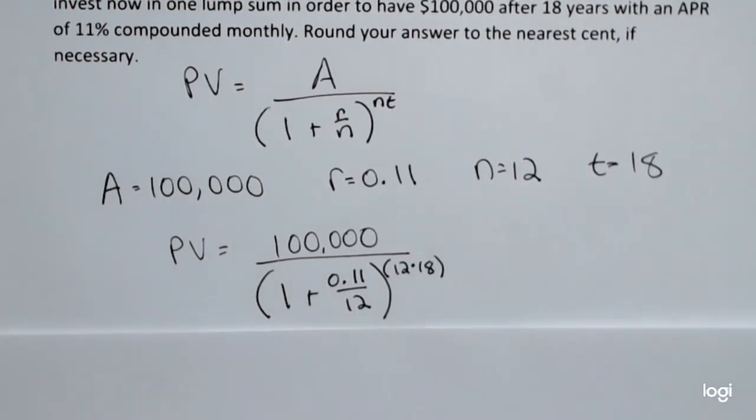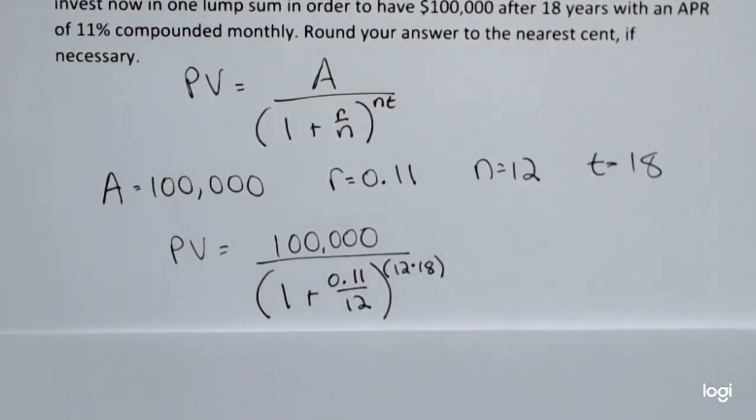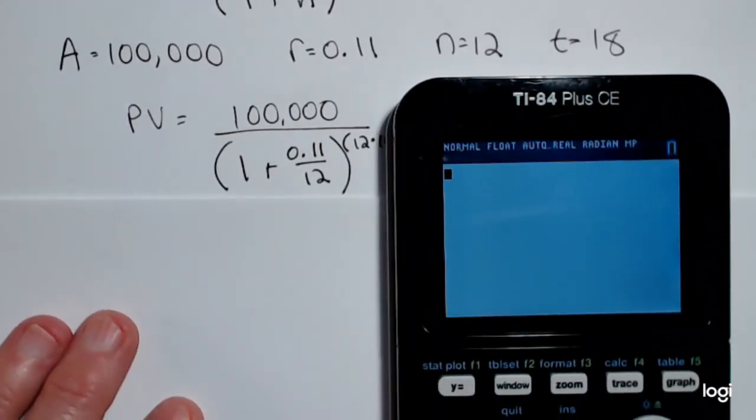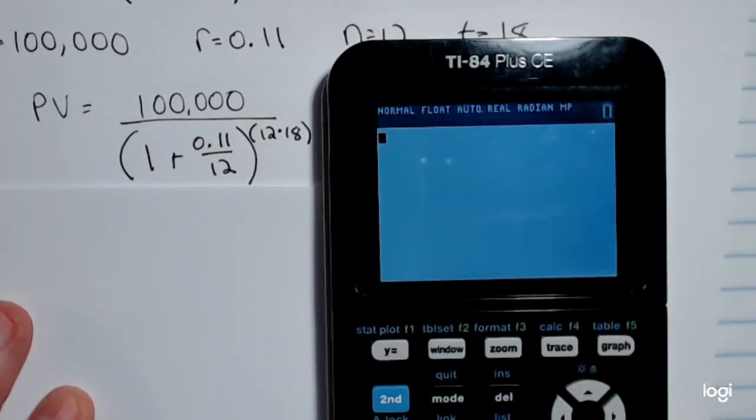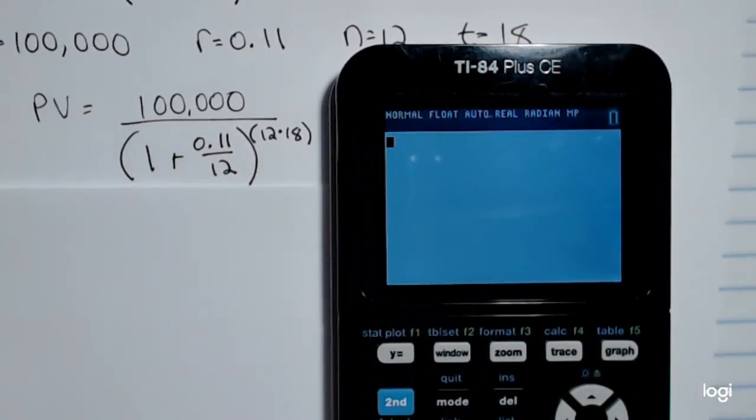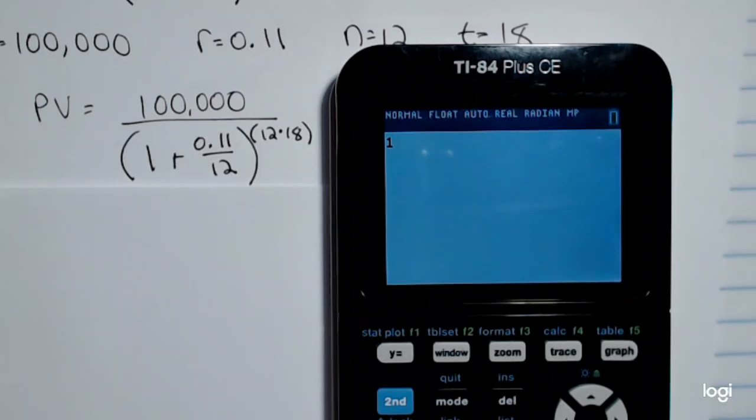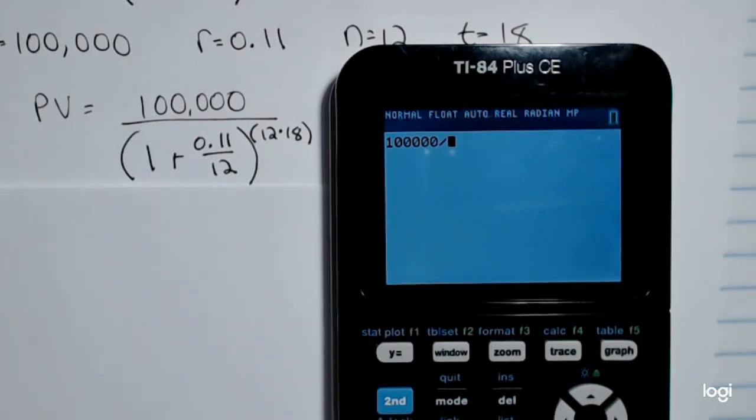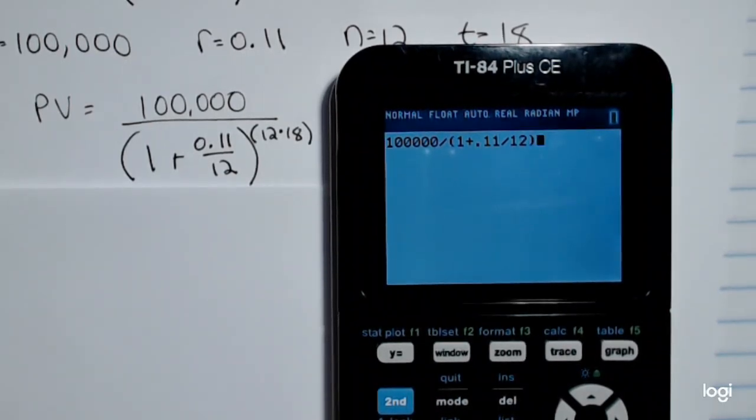To get this into your calculator in basically one step, it's going to be 100,000 divided by, I'm going to open up a set of parentheses, 1 plus 0.11 divided by 12, close the parentheses.